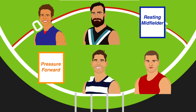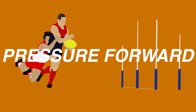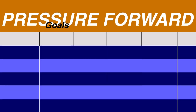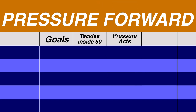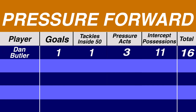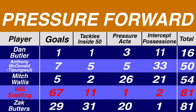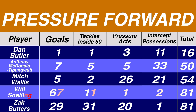Finally, we wanted a player who reflects the needs of small forwards to be as damaging with their pressure as they are on the scoreboard. For the statistics of goals, tackles inside 50s, pressure acts, and intercept possessions, Dan Butler was selected with 16 points. Interestingly, young Bomber Will Snelling would have been breathing down his neck had goals not been included.